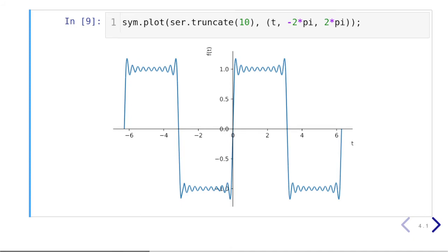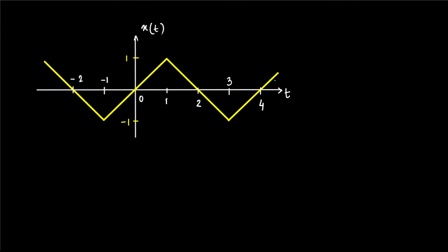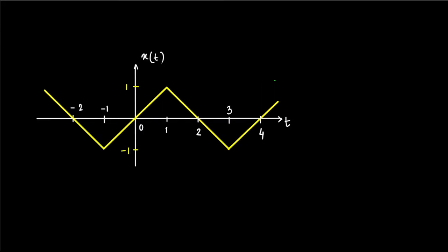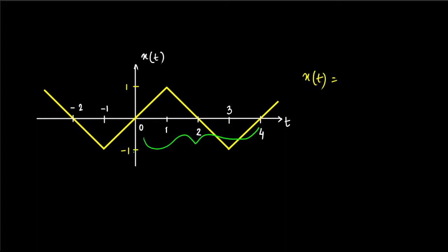Now let's talk about the next signal, which is slightly more difficult to define. As long as we can define the signal for one full period, we are fine. Looking at the signal, we can see repetition from minus two to plus two, so the full period is four seconds. We can define the signal from minus two to plus two — it's entirely our personal preference.